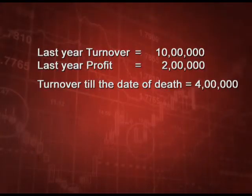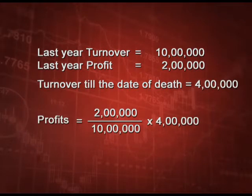For turnover basis: if last year's turnover was 10 lakh, last year's profit was 2 lakh, and turnover till the date of death is 4 lakh, profits are calculated proportionately — 2 lakh divided by 10 lakh multiplied by 4 lakh equals 80,000. The deceased partner's share is then calculated per the profit sharing ratio given in the question, whether 5:3:2, 3:2:1, or equal.